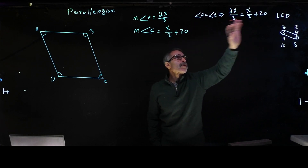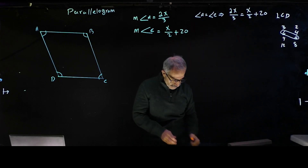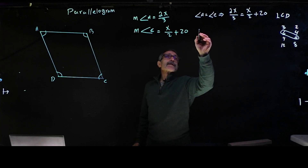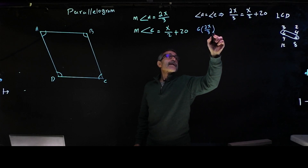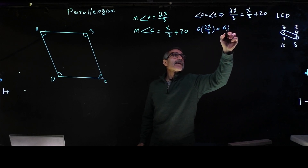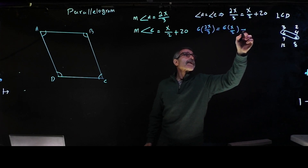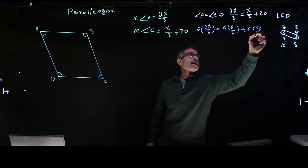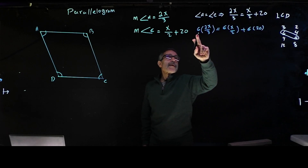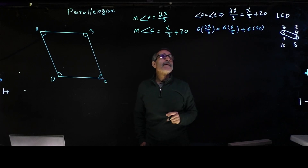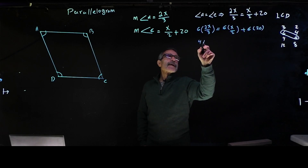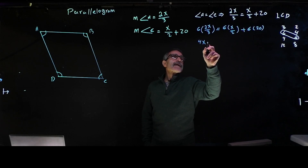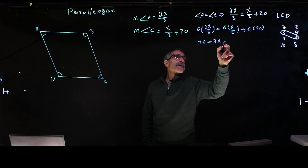We're going to multiply this whole equation by 6 — everything. So we get 6 times 2x divided by 3 equals 6 times x divided by 2 plus 6 times 20. Simplifying: that becomes 12 divided by 3 times x, which is 4x, equals 3x plus 120.